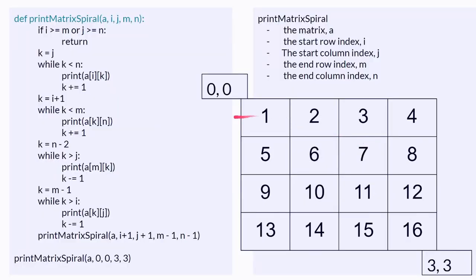So, first you make a function called printMatrixSpiral, where you pass in the matrix, which is A.